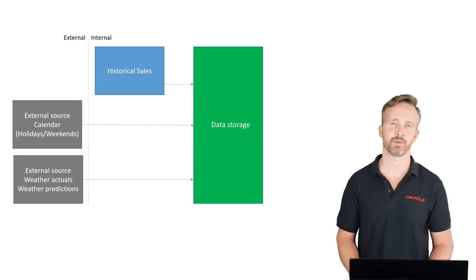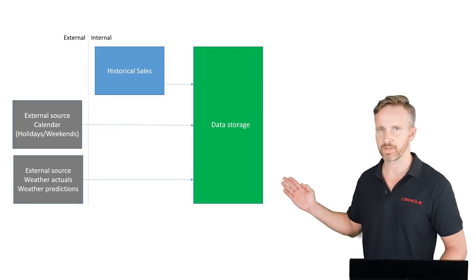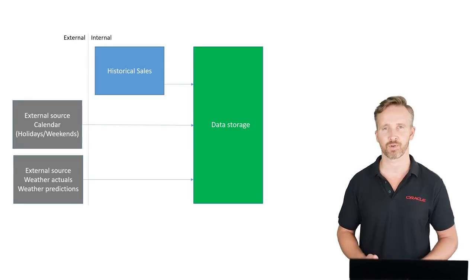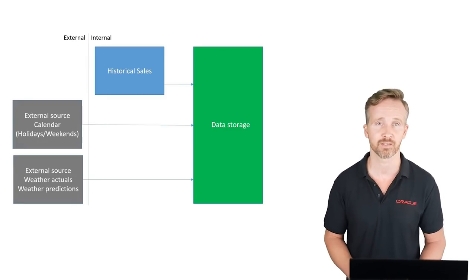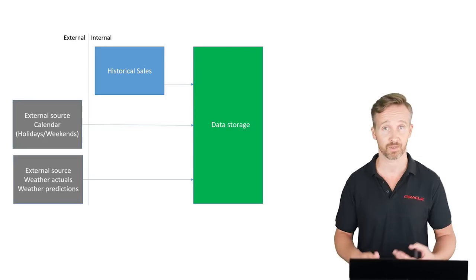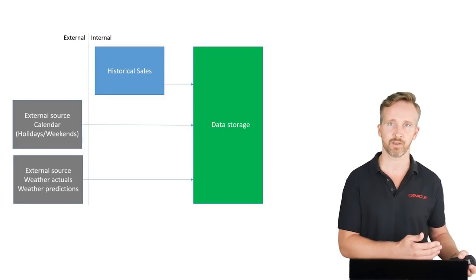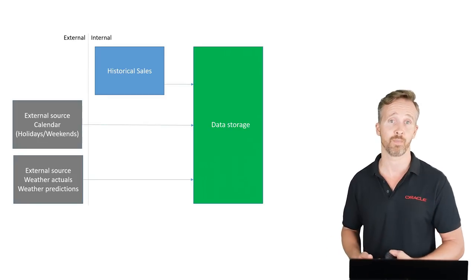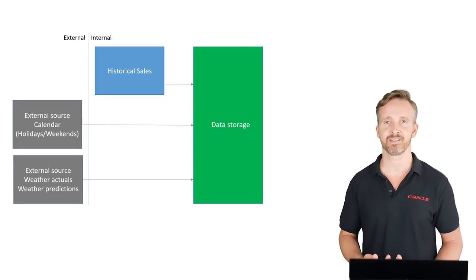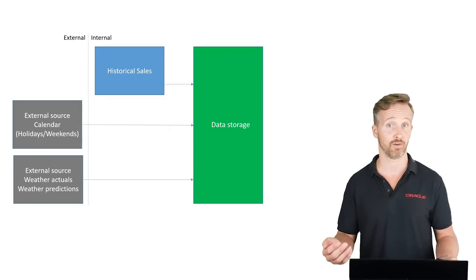Let's talk about the data sources for our example case. Sources can be either internal or external. First, the most obvious internal source: the historical values of the sales time series. In addition, we're adding an external source for weather — variables such as temperature, rain, and wind speed — because that has some relationship with sales. This source holds both historical weather values and a few days of weather prediction. Last, we have an external source with calendar data, to know whether it's a working day, weekend, or holiday.